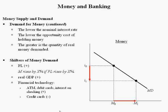Another shifter of money demand is real GDP. If real GDP is growing, our incomes are going up and we can afford to hold more money. Financial technology also shifts money demand — the growth in ATM machines, the popularity of debit cards, and banks paying interest on checking accounts, along with credit cards, reduce the demand for money.